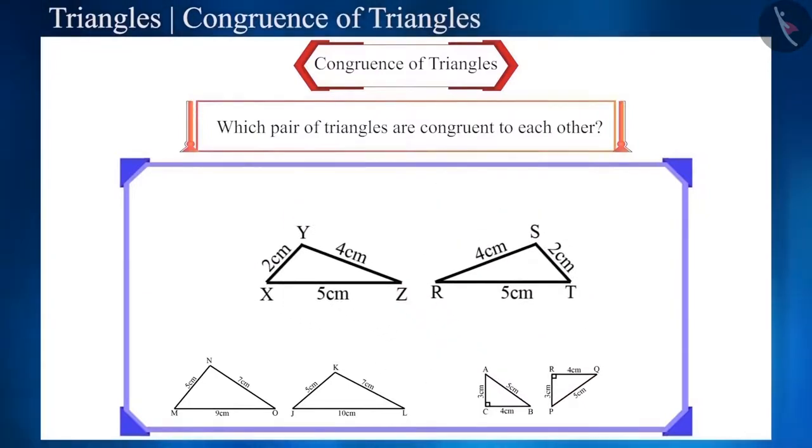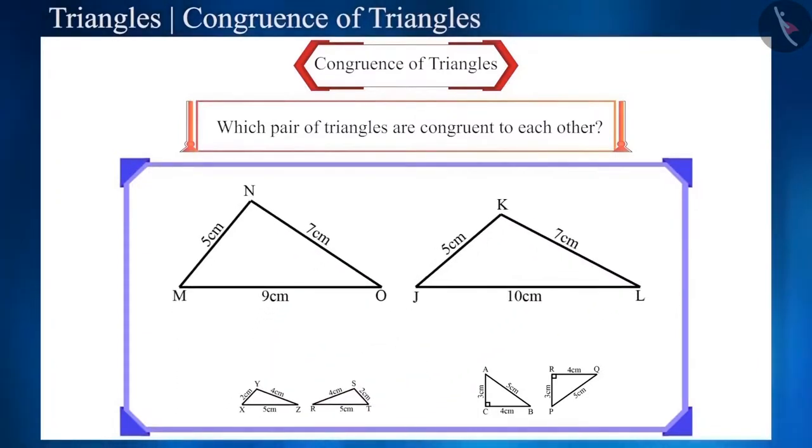What do you think looking at the second pair? Yes, these are also congruent triangles. These look like a mirror image of each other. Now notice the last pair. These triangles are not congruent to each other because the sides of these two triangles are not equal to each other.